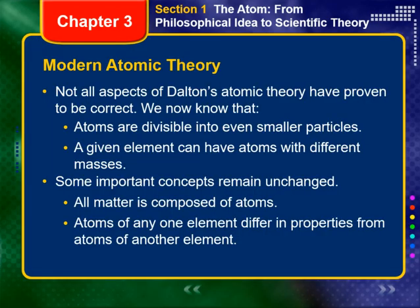By relating atoms to the measurable property of mass, Dalton turned Democritus' idea into a scientific theory that could be tested by experiment. But not all aspects of Dalton's atomic theory were proven to be correct. For example, today we know that atoms are divisible into even smaller particles, although the law of conservation of mass still holds true for chemical reactions. And, as you will see in section 3 of this chapter, we know that a given element can have atoms of different masses. Atomic theory has not been discarded, however. Instead, it has been modified to explain the new observations. The important concepts that, for one, all matter is composed of atoms, and that, two, atoms of any one element differ in properties from atoms of another element remain unchanged.